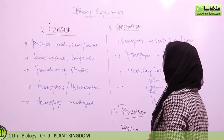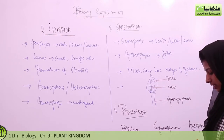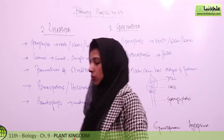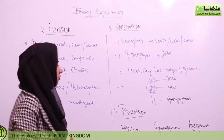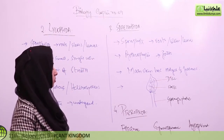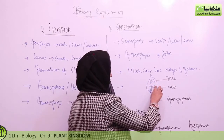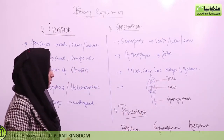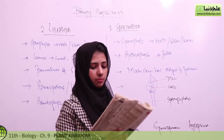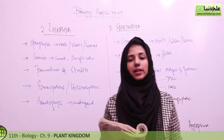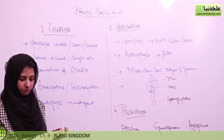In Sphenopsida, they are well differentiated into root, stem, and leaves. We normally call them Arthrophytes — jointed plants — because the whole body consists of different joints. The main stem has ridges and furrows. Looking at the structure of the sporangiophore, there are discs and stalks. The example is Equisetum. The thaloid gametophyte grows on clay soil.